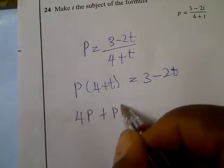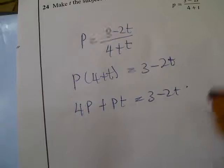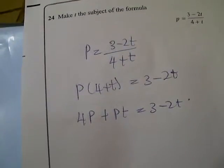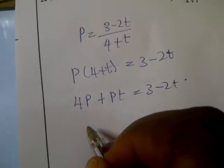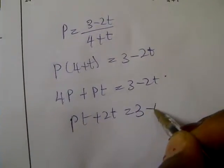4P plus Pt equals to 3 minus 2T. Now let's take all the T's to this side and the rest to this side. You now have Pt plus 2T equals to 3 minus 4P.